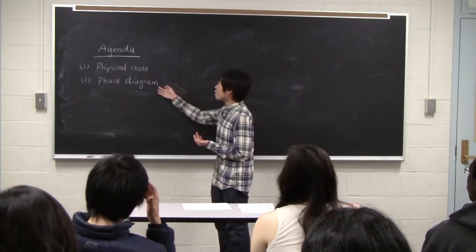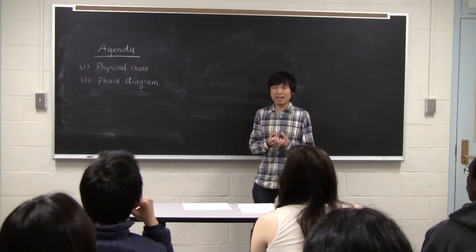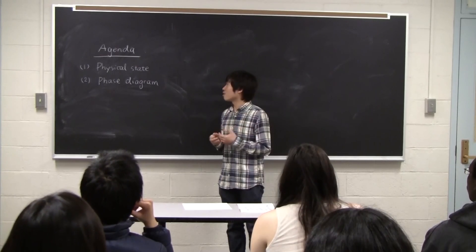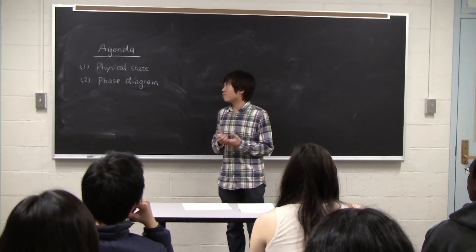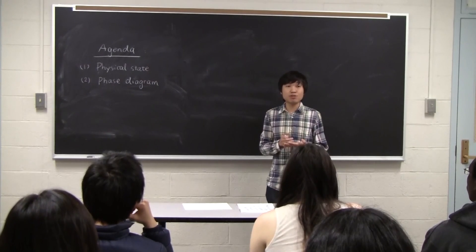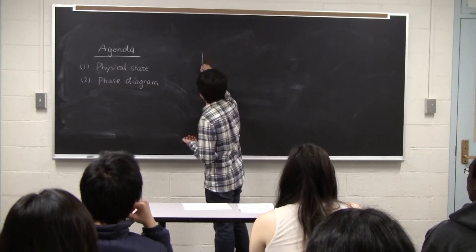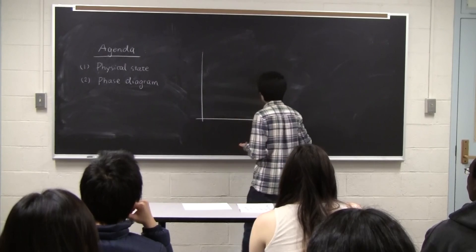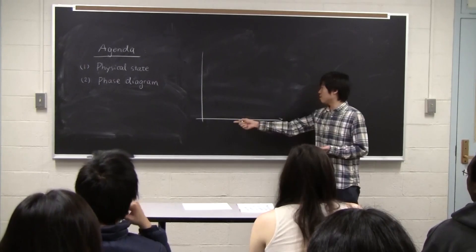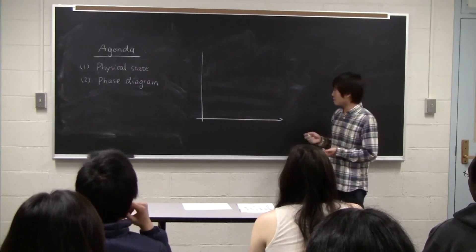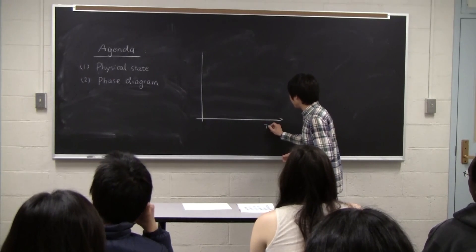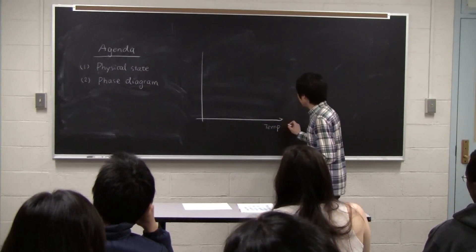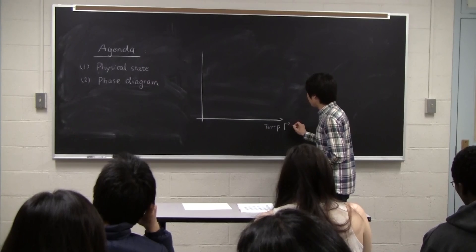So phase diagram is a tool for engineers or scientists to interpret or very easily identify the physical state at a certain temperature and pressure. So we have this diagram and on the horizontal axis, it's temperature with a unit of Celsius.